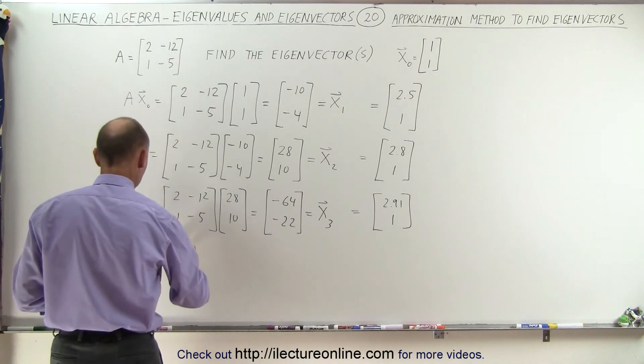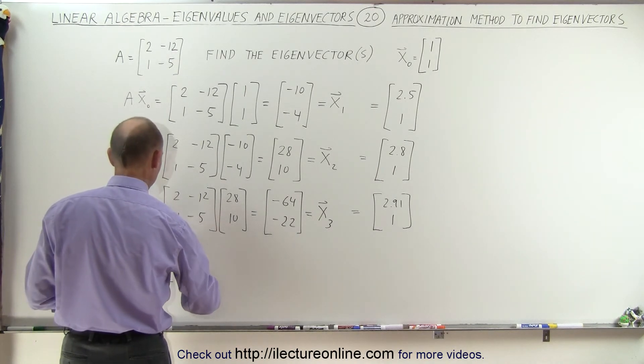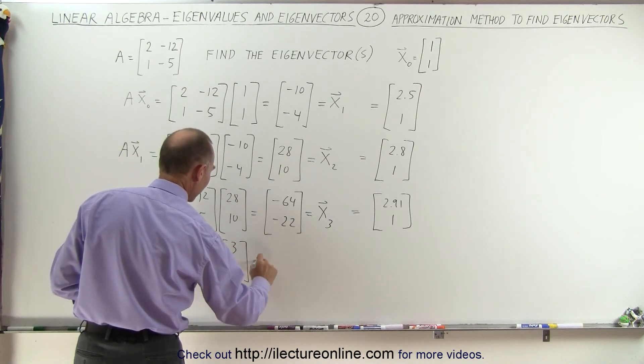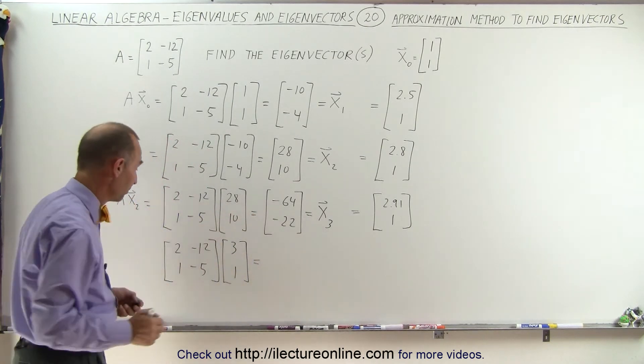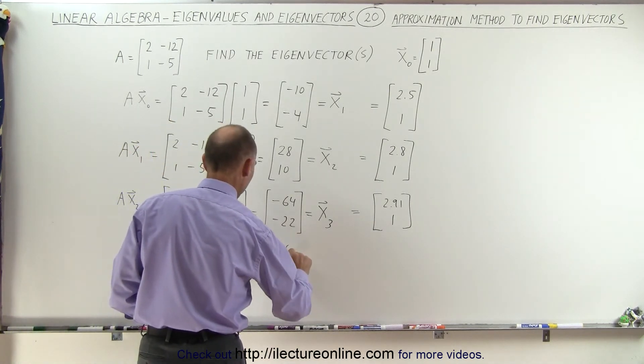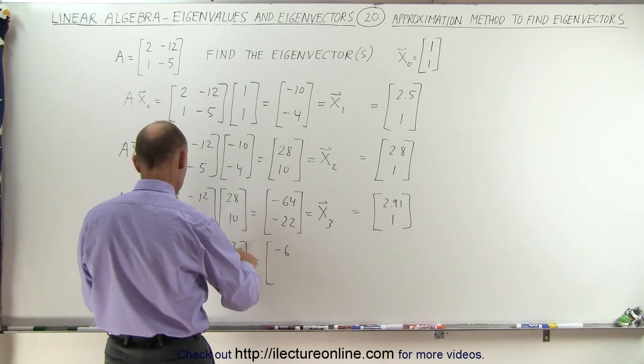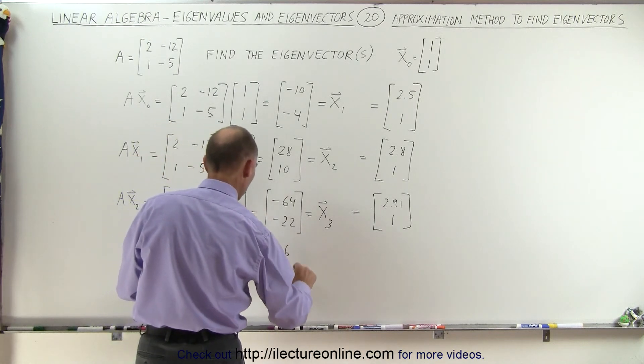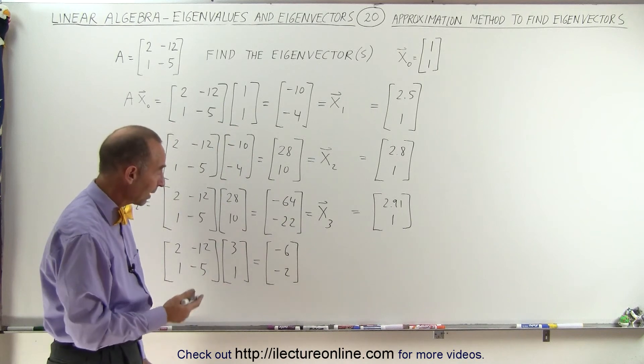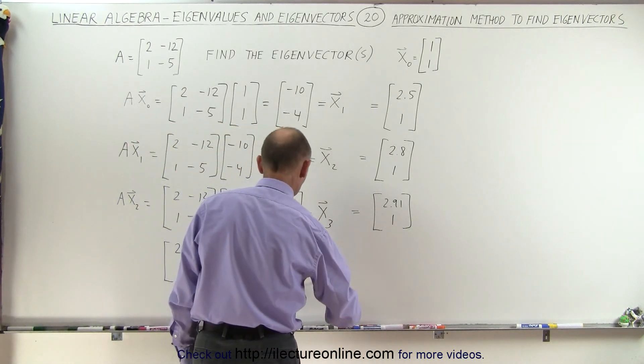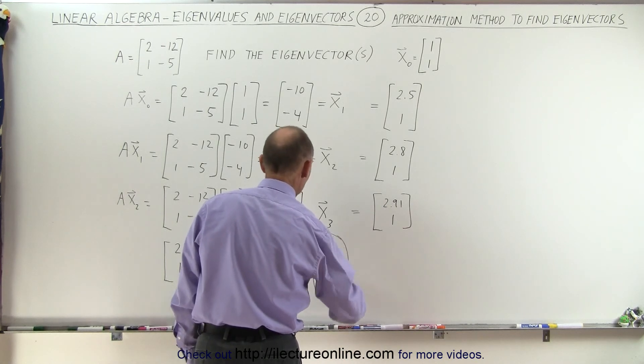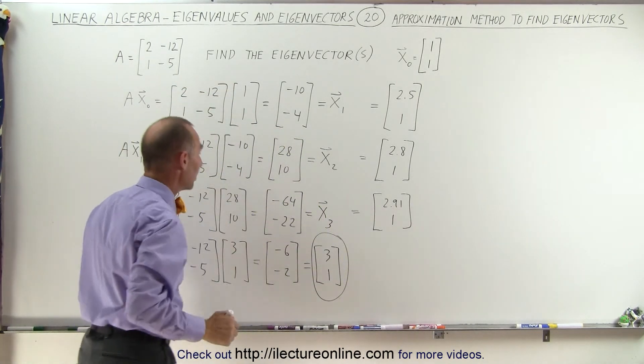So let's check it out. Let's multiply A times what I think is the eigenvector, [3, 1]. Let's see if we end up with a 3 to 1 ratio. So this is 6 minus 12, which is minus 6. And we have 3 minus 5, which is minus 2. And if you multiply both top and bottom by negative 1 to make it 6 to 2, that is indeed the same as 3 to 1. And that is therefore my eigenvector of this particular matrix.